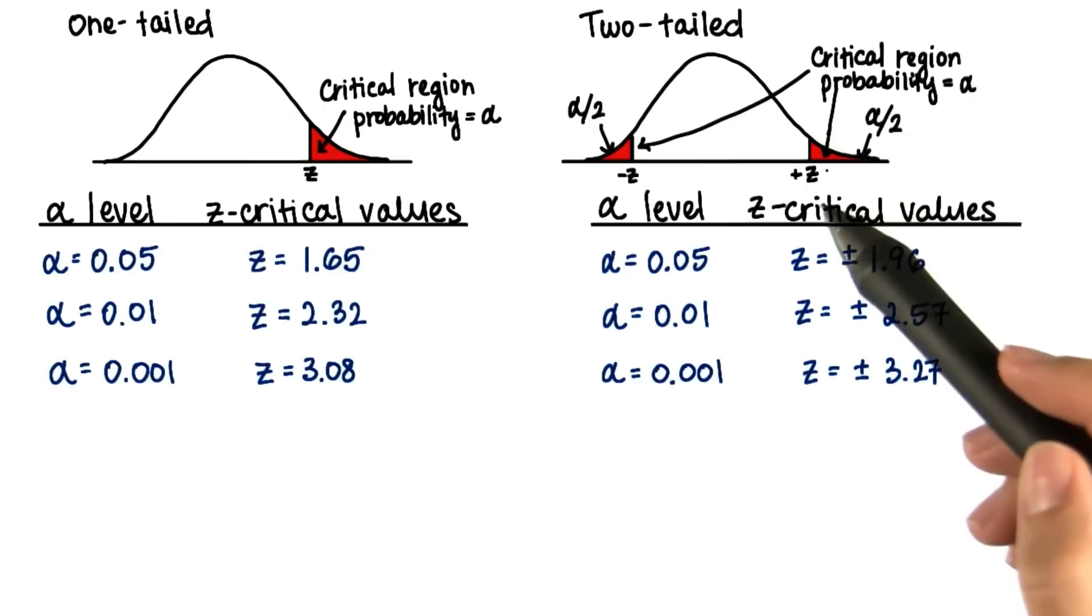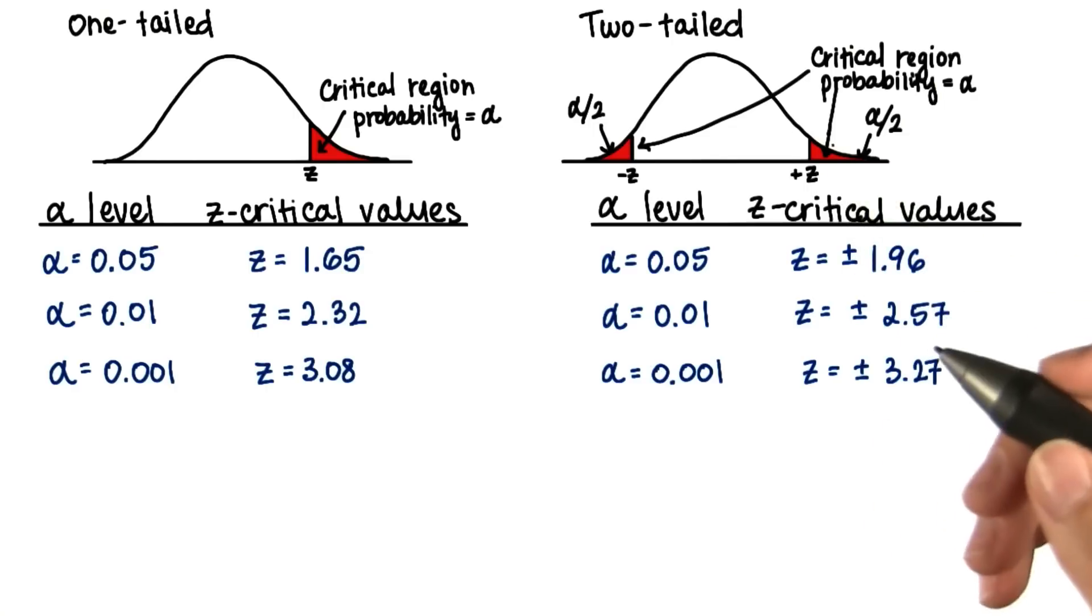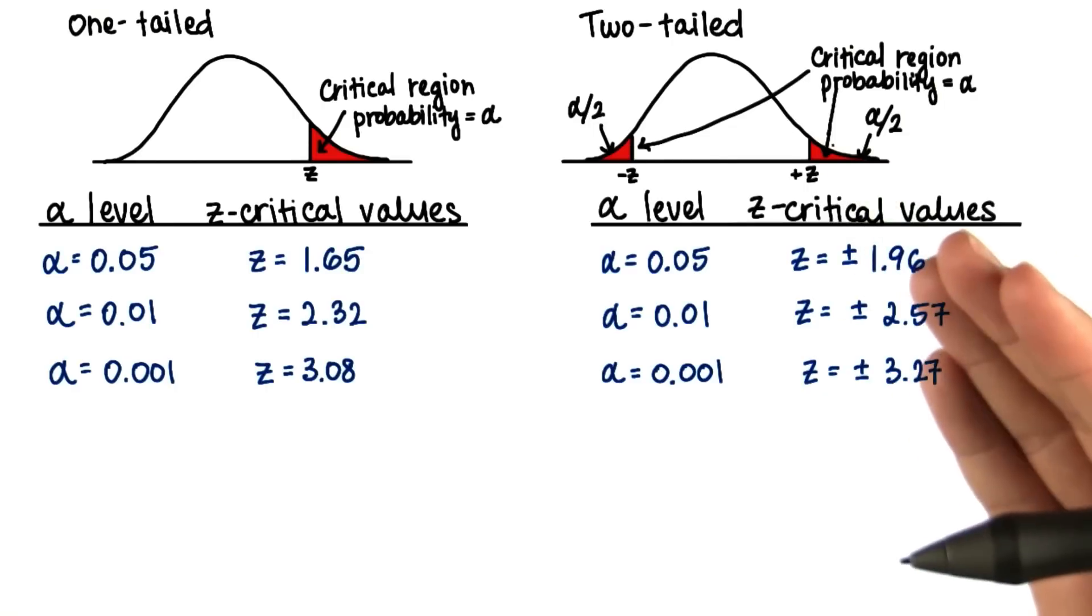or here or here for a two-tailed test, then we decide that most likely we did not get this sample mean by chance.